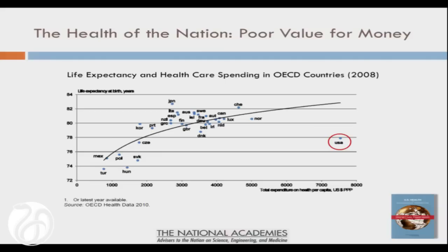This is the famous slide you often see from our prior IOM committee's report, showing health care spending as a percentage of GDP for the US and other countries. The red circle on the far right is our country, and the point typically made here is we don't get good value for our dollar — Eduardo and others made this point.